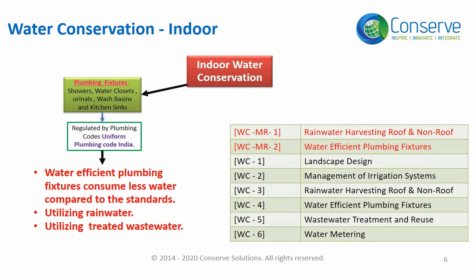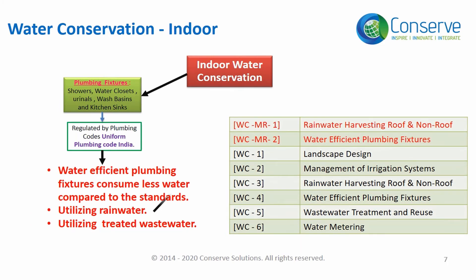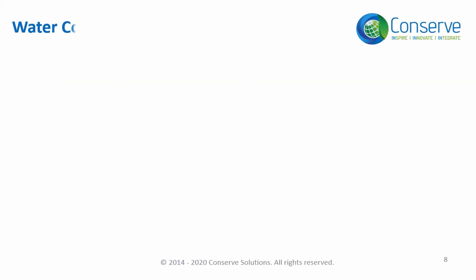The next step is to replace potable water with treated non-potable water in flush fixtures, addressed in Water Conservation Credit 5 — Wastewater Treatment and Reuse. The next step is to look for alternate sources of water other than the municipal supply. The closest source with acceptable quality is rainwater; rainwater harvesting is addressed in Mandatory Requirement 1 and Credit 3 — Rainwater Harvesting, Roof and Non-Roof.